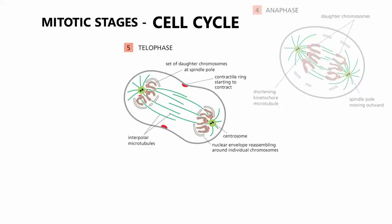During telophase, daughter chromosomes arrive at each spindle pole and decondense while the nuclear envelope assembles around them, completing the formation of two nuclei and marking the end of mitosis.